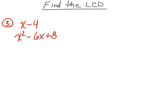Example number 3. We're assuming that x minus 4 is one of the denominators and x squared minus 6x plus 8 is the other denominator. We're going to start by factoring x minus 4. Now that can't be factored, so I'll just leave it as x minus 4.